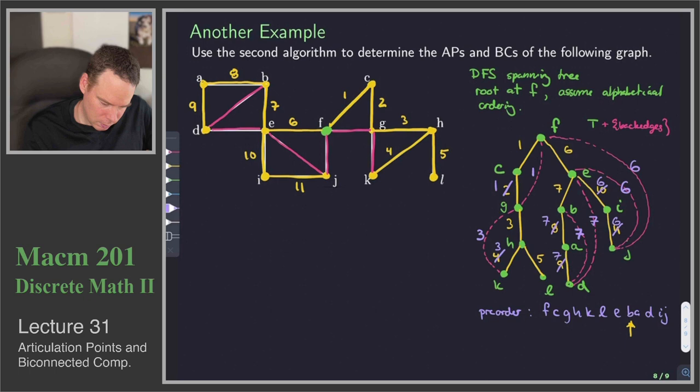And we should be done at this point because A has no back edges going down. D doesn't have any back edges going down. Neither do I or J.